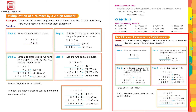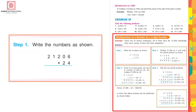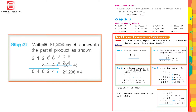Now, multiplication of a number by a two-digit number. There are twenty-four factory employees and each of them has rupees twenty-one thousand two hundred and six. How much money is there with them altogether? Write the number: twenty-one thousand two hundred and six, that is 21206, multiplied by twenty-four. If we expand twenty-four, it is twenty plus four.